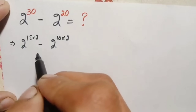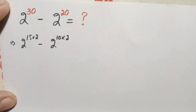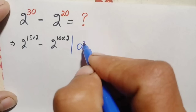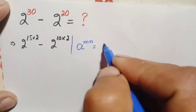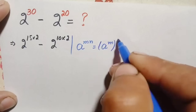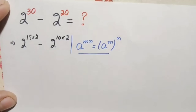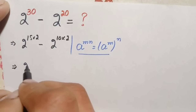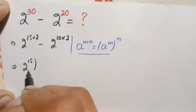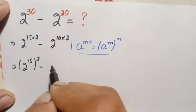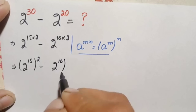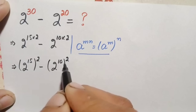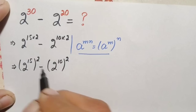In these two terms we will use an exponential identity: we can write a raised to power m times n as a raised to power m, whole raised to power n. Using this identity, 2 raised to power 15 times 2 becomes 2 raised to power 15, whole squared, minus 2 raised to power 10, whole squared.